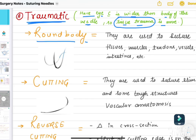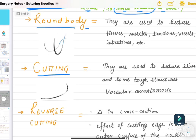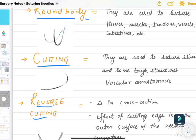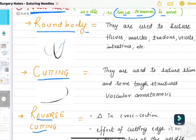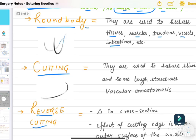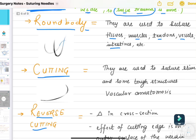We will be reading about these types in more detail. Round body needles are used to suture tissues, muscles, tendons, vessels, and intestines. Round body is used for soft tissues like muscles, tendons, vessels, and intestines.